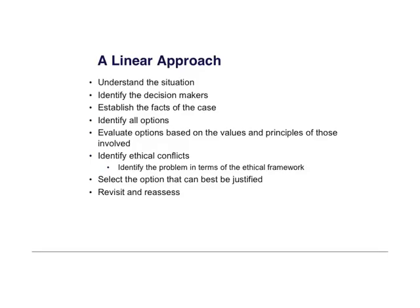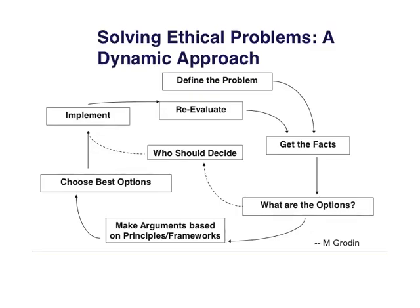This is a simple step-by-step approach. First, understand the situation and gather all your facts. Identify who will be making decisions and why, establish the facts, and identify all options of care. Evaluate the options based on the values and principles of those involved. Identify the conflicts and identify the problem in terms of the ethical framework you're using. Then select the option that can best be justified, and always revisit and reassess. Another way to look at this is just with a simple flow chart. Once you've defined the problem and obtained all relevant facts, figure out what options are clinically possible, make arguments about which plans should be followed, and often there will be a parallel discussion about who the decision maker should be. Key to this framework is to reevaluate after you have implemented your plan to see if you've learned anything that might help you the next time you face this scenario.